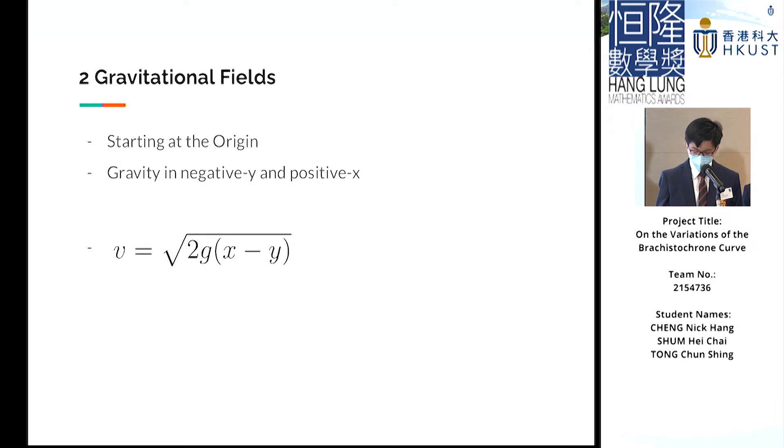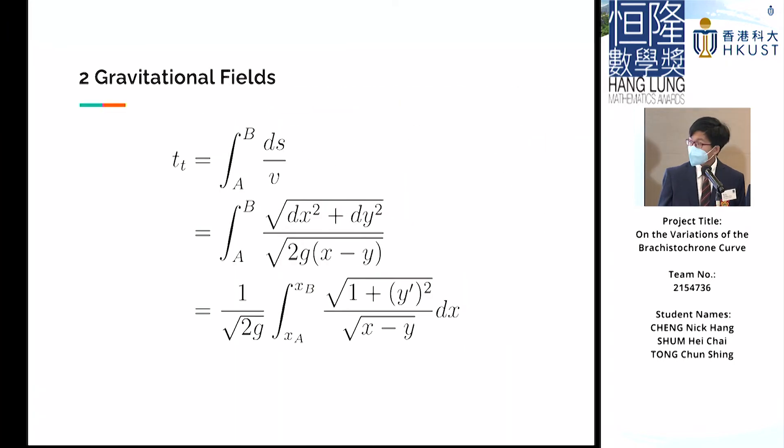In our report, we presented two gravitational fields, but one could also consider gravity along with a uniform electric field pointing in the positive x direction. Since velocity is ds/dt, we can express the total time as an integral from starting point A to ending point B of ds/v. Simplifying, we obtain an integral from the x-coordinate of A to the x-coordinate of B of this integrand dx.